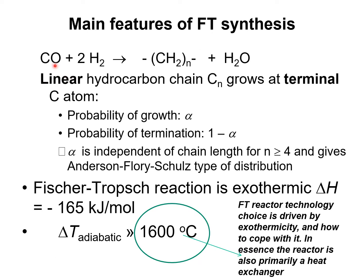In the Fischer-Tropsch process, syngas consisting of carbon monoxide and hydrogen is converted to hydrocarbons. The distribution of chain length of the hydrocarbons formed in the Fischer-Tropsch process follows the Anderson-Flory-Schultz distribution.